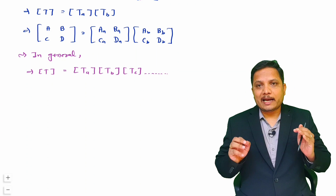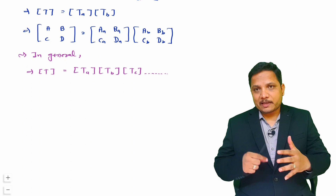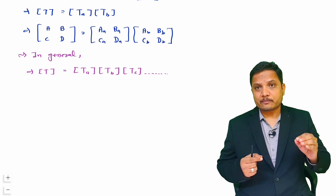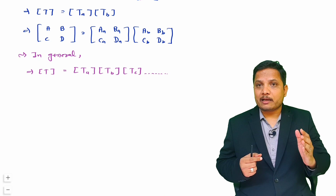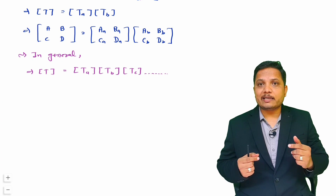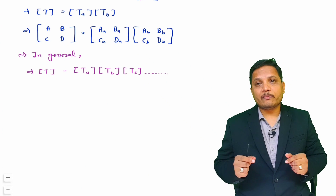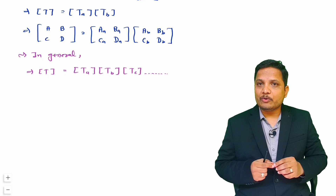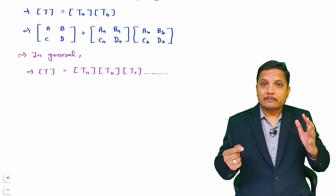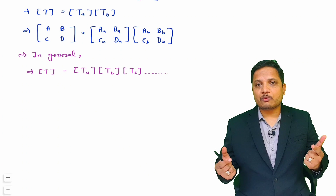I hope it is now clear how we can identify the equivalent network parameters for cascaded connections. In my previous videos I explained series and parallel connections — for series connection the equivalent Z parameters are the algebraic sum, and for parallel connection the equivalent Y parameters are the algebraic sum. In the next videos I will explain series-input parallel-output and parallel-input series-output connections, which will be quite interesting. Thank you so much for watching.